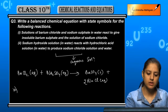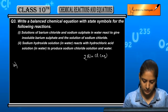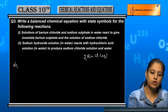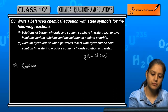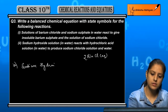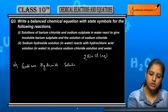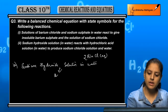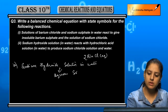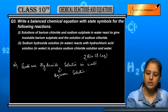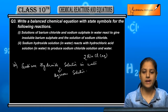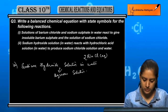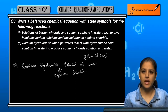The second equation: sodium hydroxide solution in water — that means it is an aqueous solution — reacts with hydrochloric acid solution in water, again an aqueous solution, to produce sodium chloride solution and water.